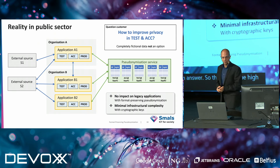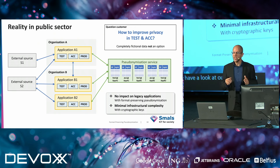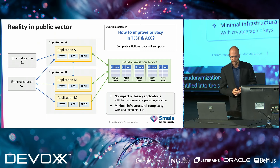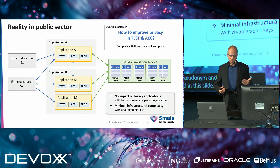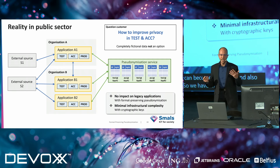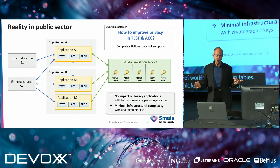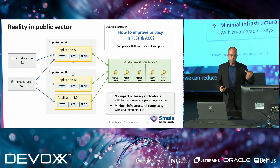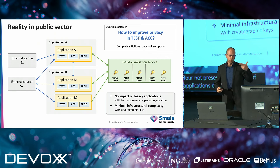Let's look at our pseudonymization service. For a given environment, we want the service to always convert an incoming identifier into the same pseudonym and vice versa. We could do this with lookup tables, but they become very large and change constantly. Instead we use cryptographic keys, which are much more compact — only 32 bytes long and staying constant over a longer period. Thanks to this approach, we can seriously reduce the complexity of our pseudonymization service. And thanks to the format-preserving character of our pseudonyms, legacy applications don't need to be modified.